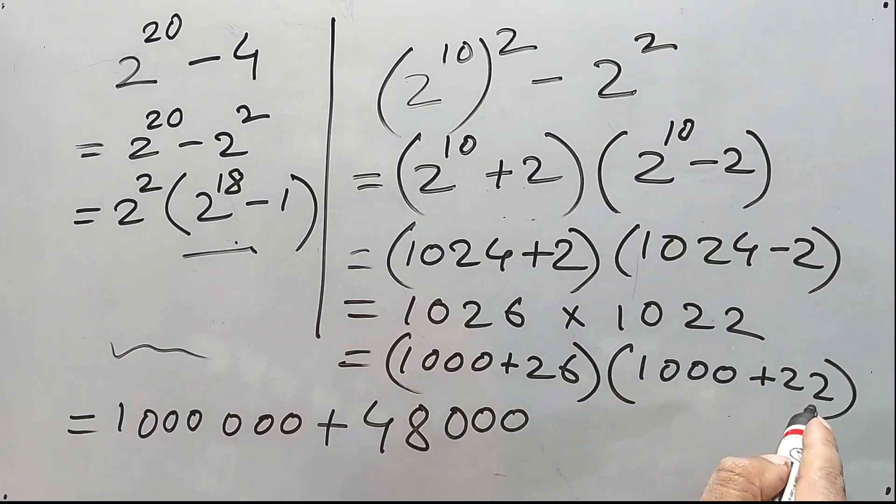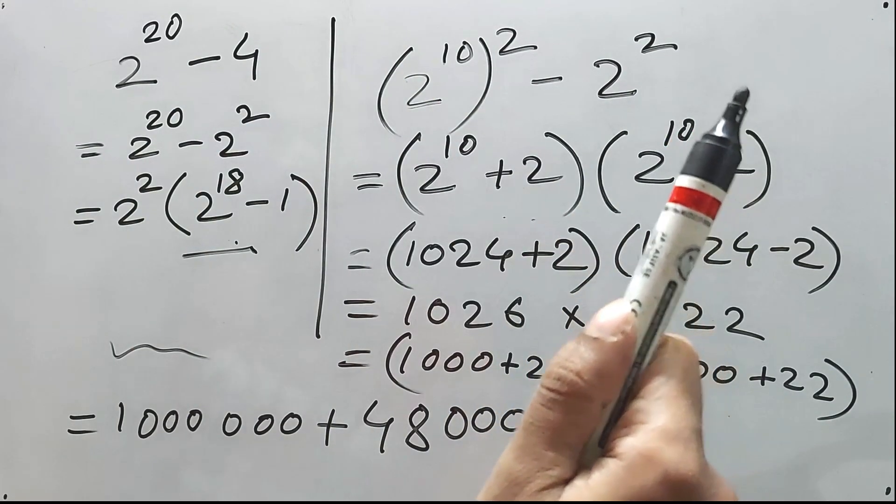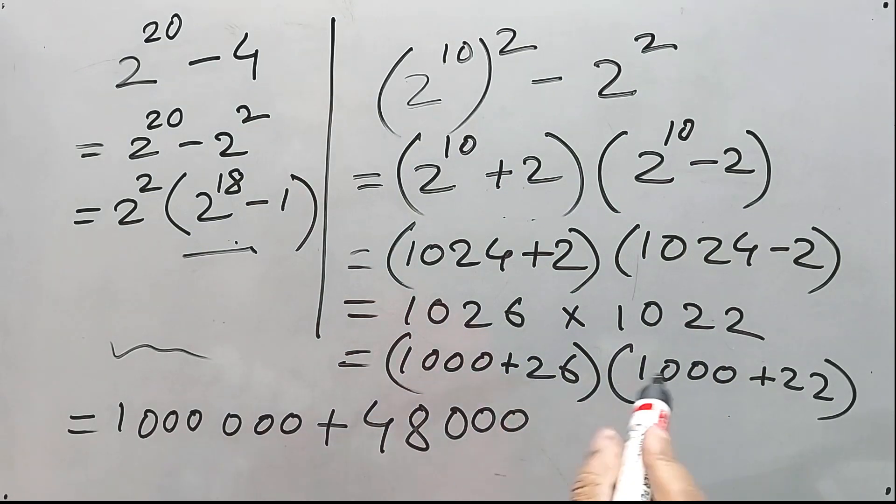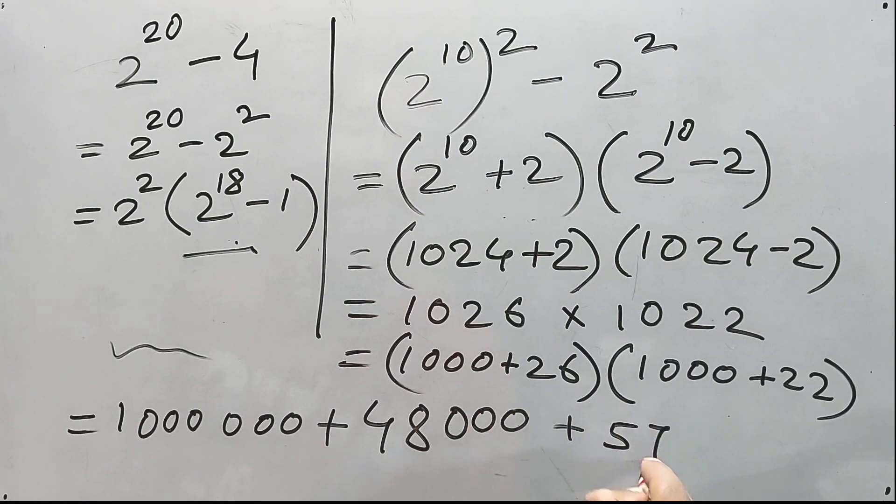And this 22 into 26. Again. I'll ask you to see how to multiply two digit numbers. You can check it in the i button. So, it will be 572.